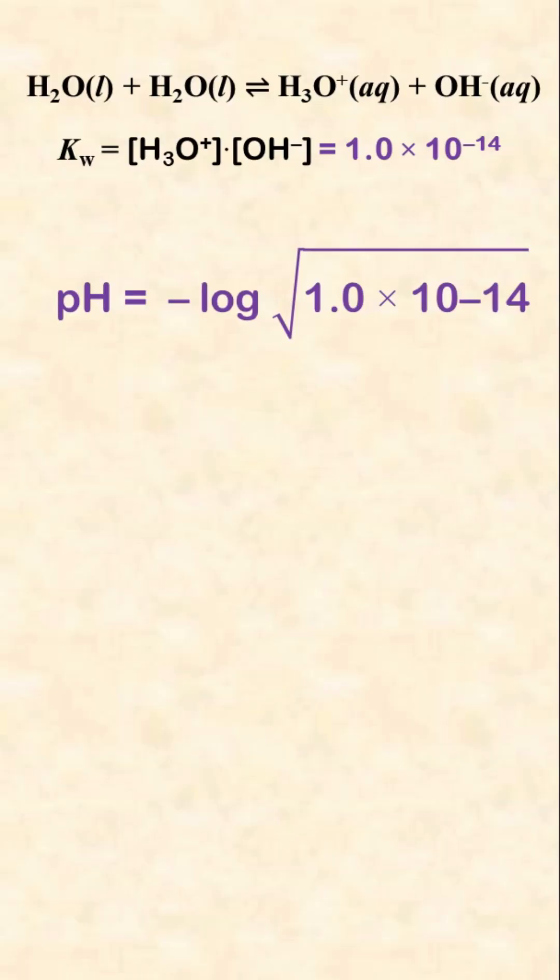Pure water has equal values of hydronium and hydroxide ions, so the pH of pure water is equal to the negative log of the square root of Kw, which is 7.00.